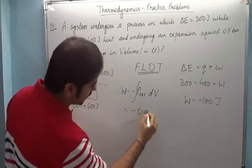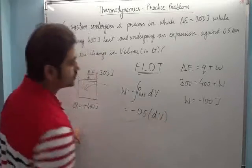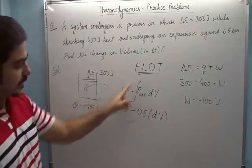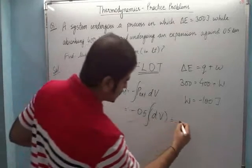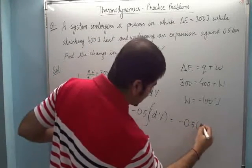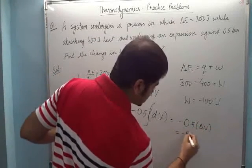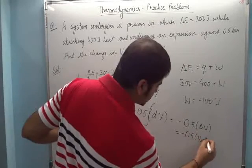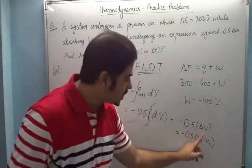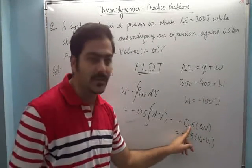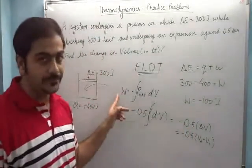So external pressure is 0.5 bar, which is fixed, so we take it out. Now when you integrate dV, the integral of dV will be minus 0.5 delta V, that is minus 0.5 into V2 minus V1. I actually have to find the change in volume, delta V.